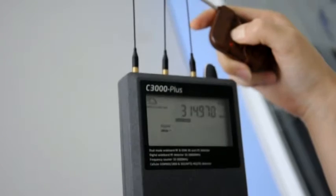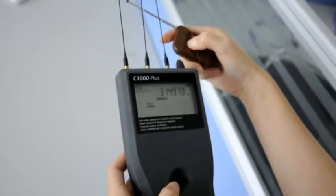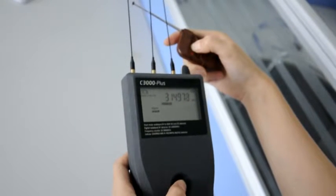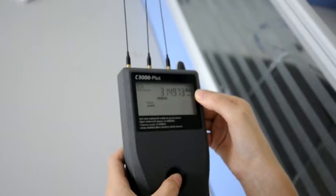As you can see, the screen displays a frequency now. And then you can press this button to hold the frequency so you can record it.